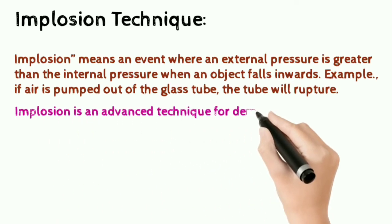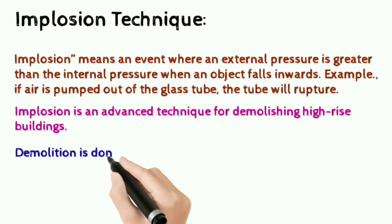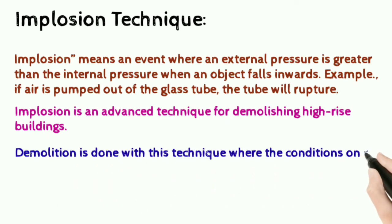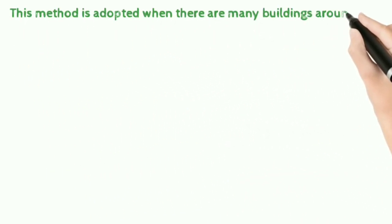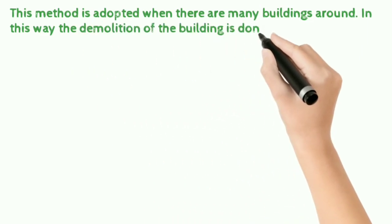Implosion is an advanced technique for demolishing high-rise buildings. Demolition is done with this technique where the conditions on site are not suitable for other methods of demolition. This method is adopted when there are many buildings around. In this way, the demolition of the building is done on its footprint.